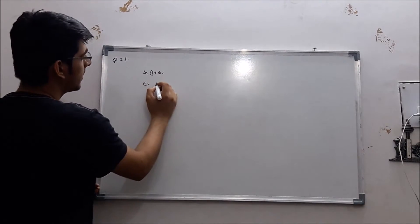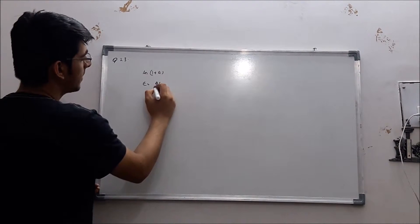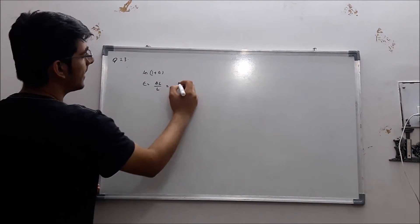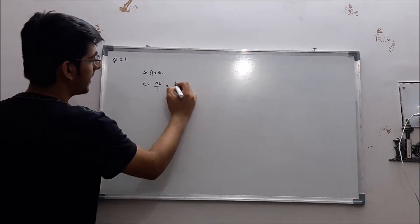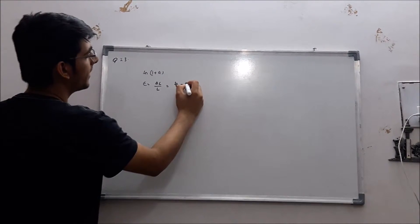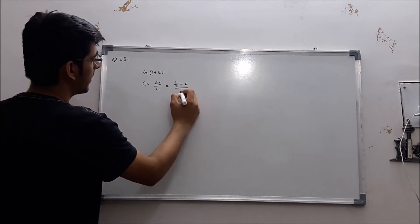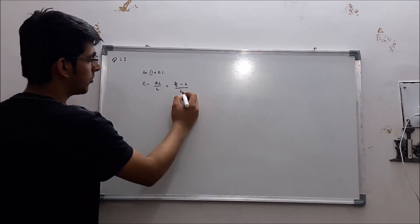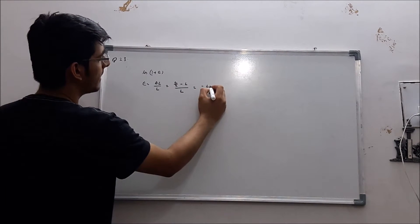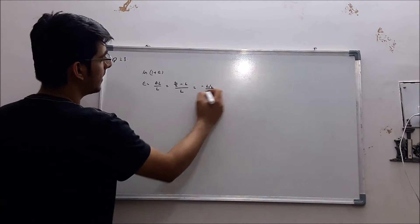So engineering strain will be delta L by L. Here delta L is final length that is L by 2 minus initial length by total length. So that will be equal to minus L by 2 divided by L.